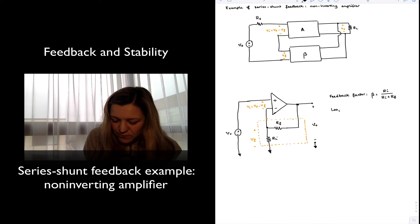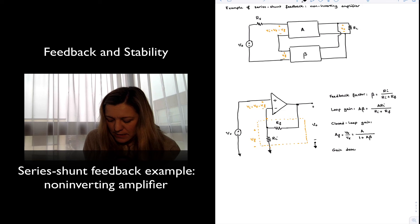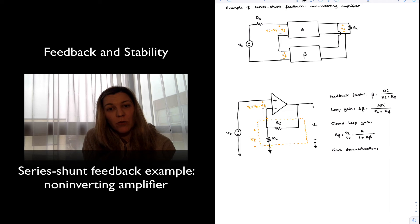Then I have my loop gain. A beta is basically going to be that times the gain. So A times RI divided by RI plus RF. My closed loop gain, AF, is going to be equal to the ratio of Vout to Vs. And we know from our previous study that it's going to be the open loop gain divided by the amount of feedback. And now if my open loop gain is sufficiently high, I will achieve gain desensitization. What do I mean by that? It will mean that my closed loop gain will become almost independent of the open loop gain and pretty much just dependent on the feedback network. Let's see how that works.